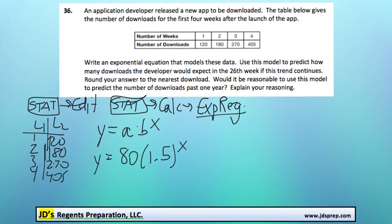And that's all we need to do for the first part of this question. We've now got our exponential equation from just using our graphing calculator. Next step is to use the model to predict how many downloads the developer would expect in the 26th week if this trend continues.